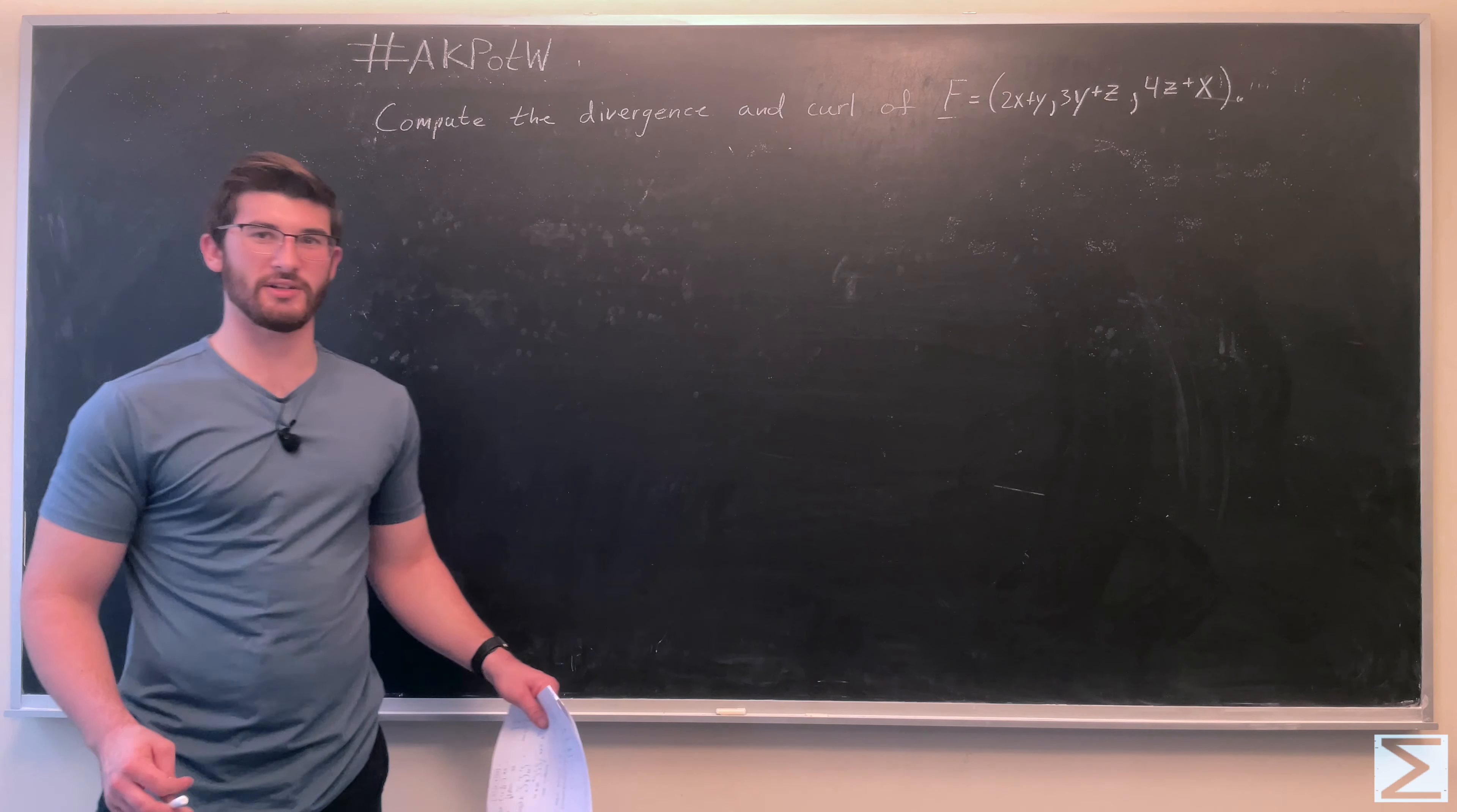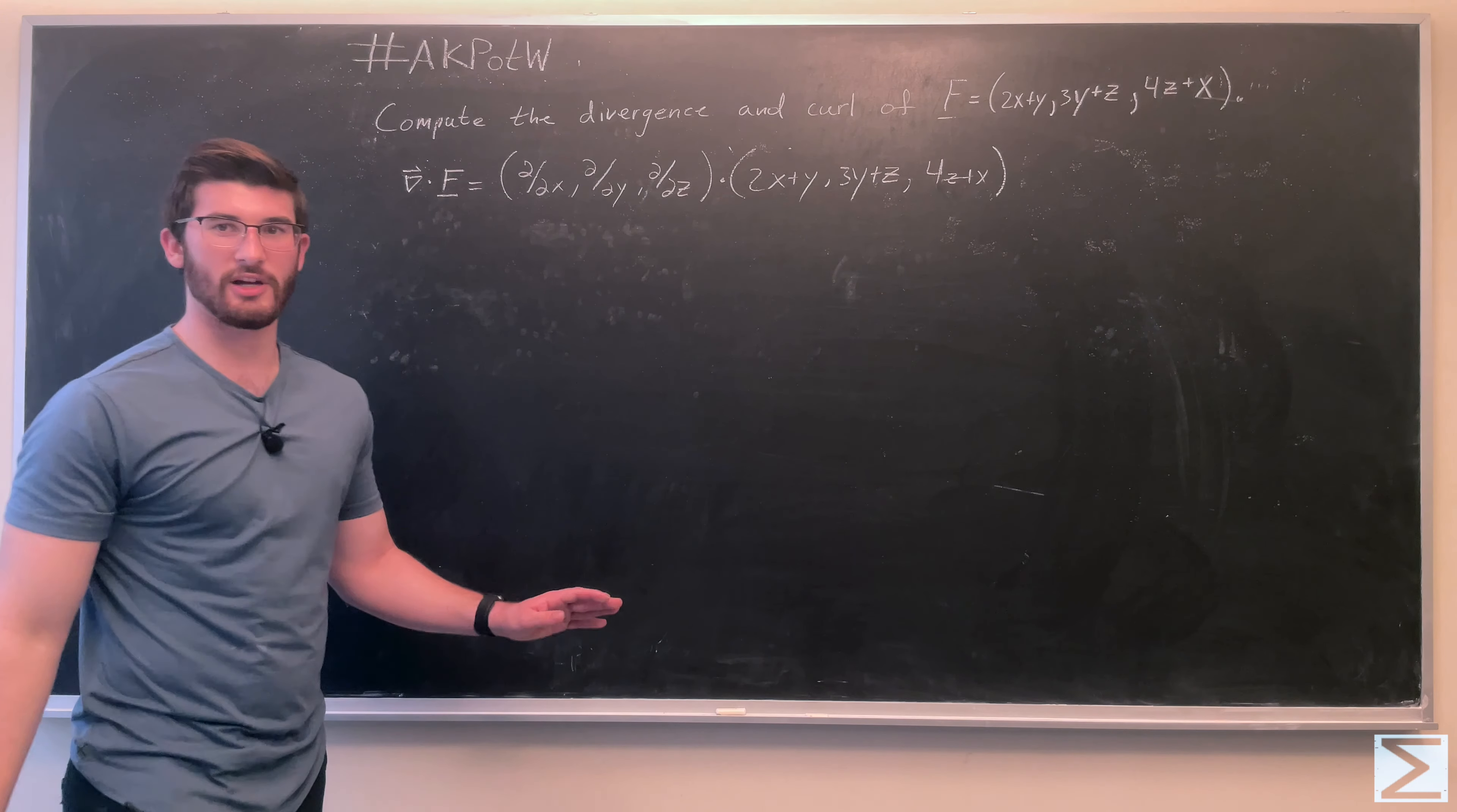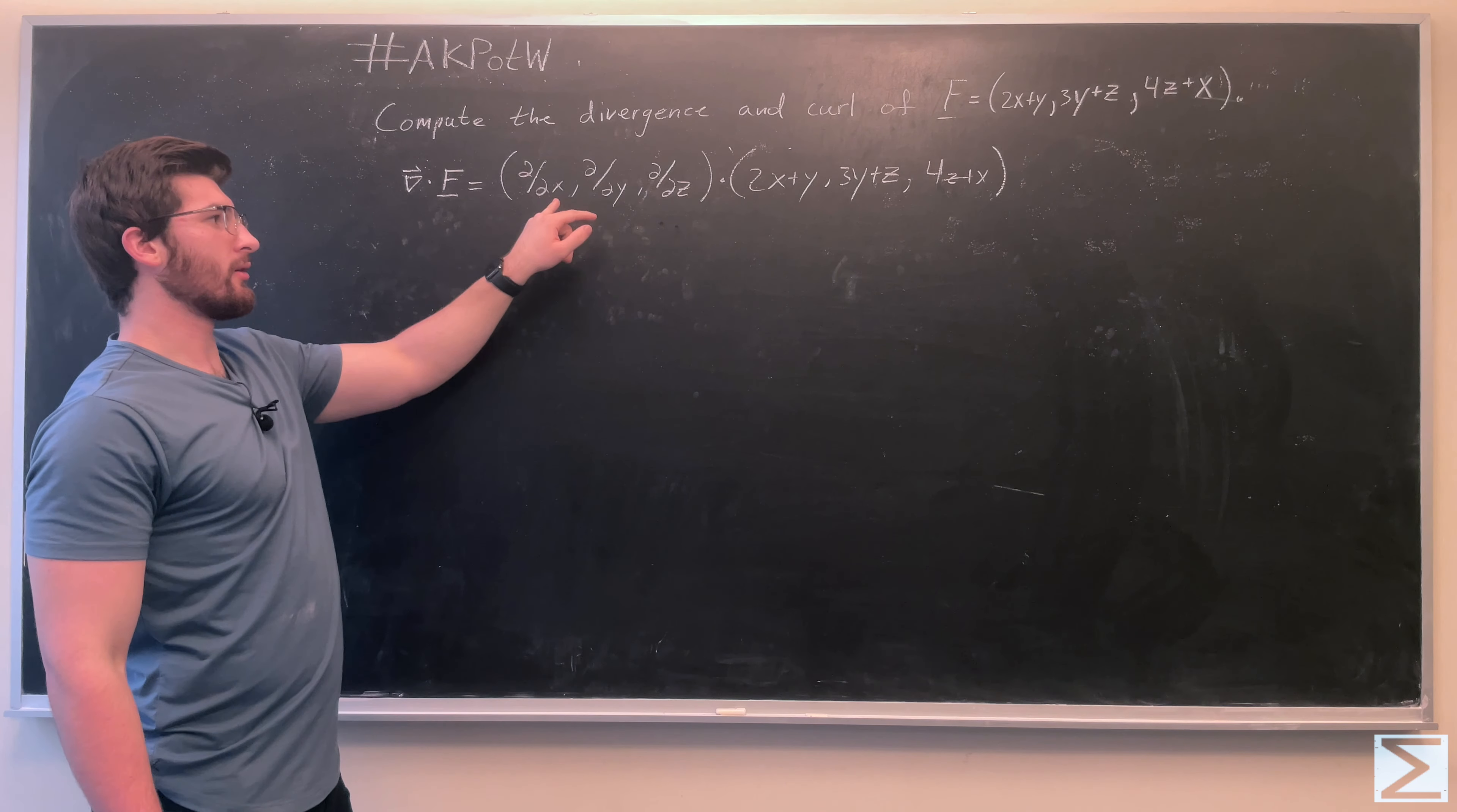So first we're going to find the divergence, which is going to be the dot product between the gradient operator and our vector field. When we write something as the dot product of the gradient operator with the vector field, it's helpful to write it out like this and think about the...